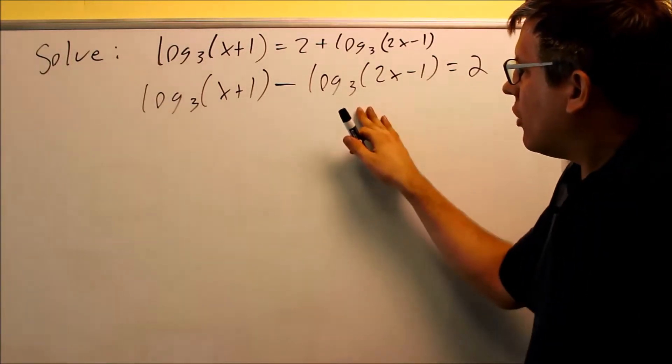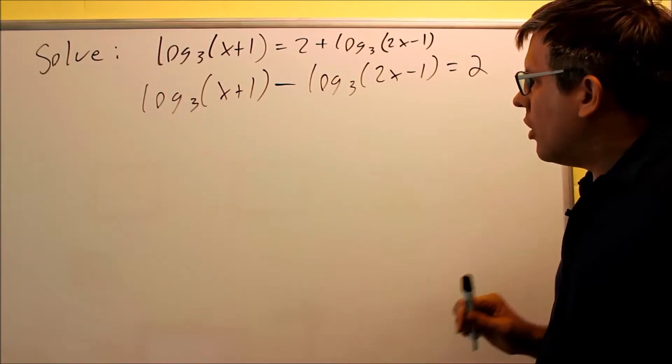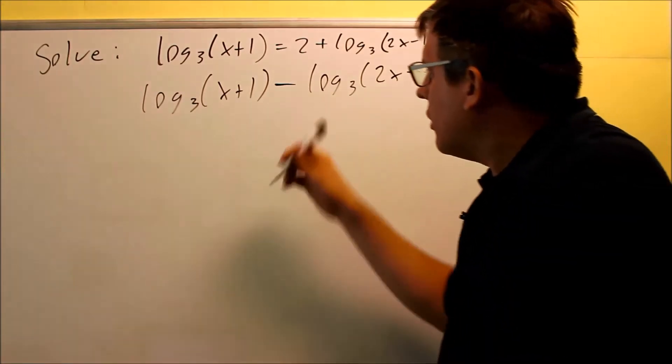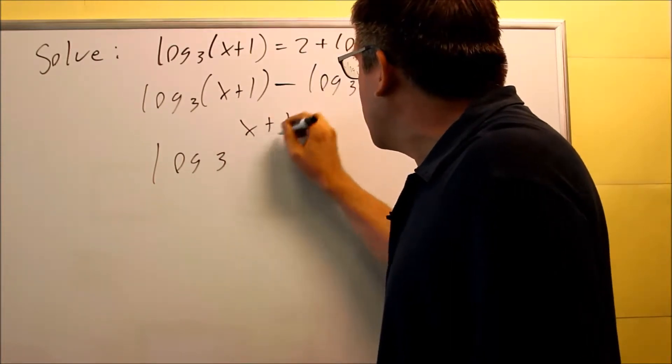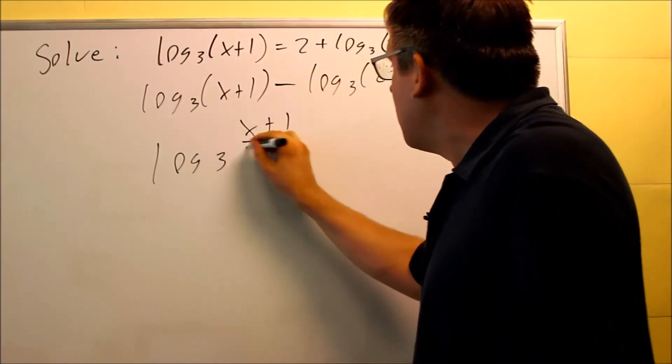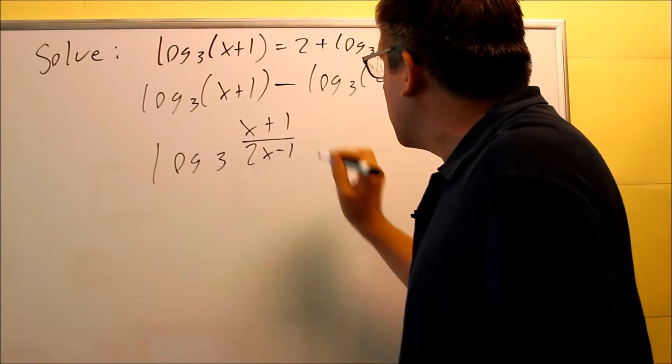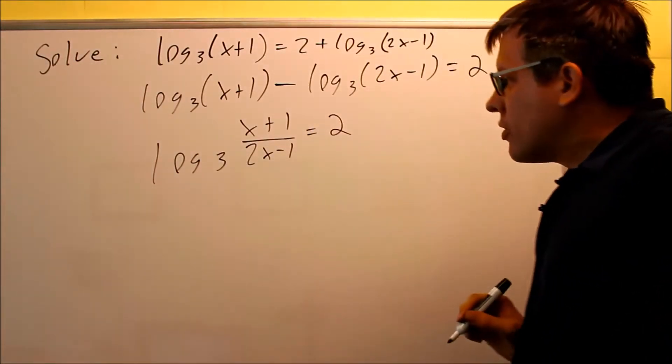Now that we have that, you're going to combine these two logs together into a single one. So because we've got the minus sign in here, once again it's going to be another one that's going to turn into a quotient. So we're going to put the first one on top. Then we have 2x minus 1 is going to go on the bottom. That's still going to equal 2.